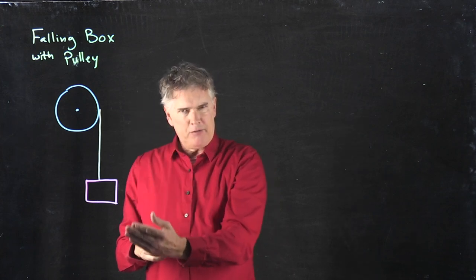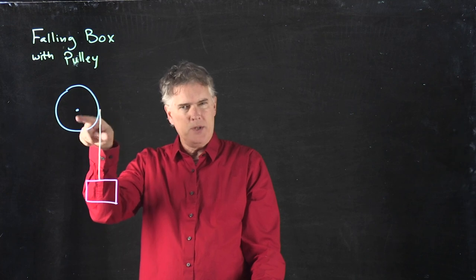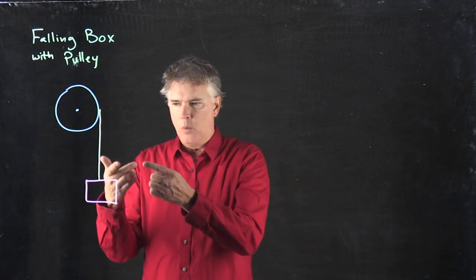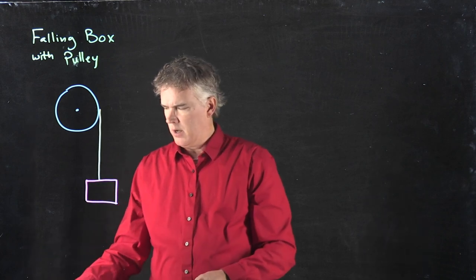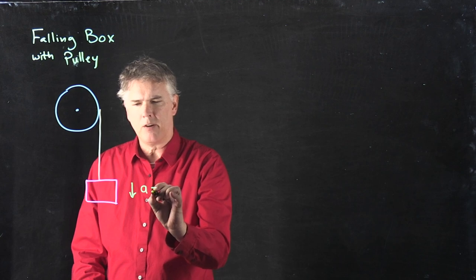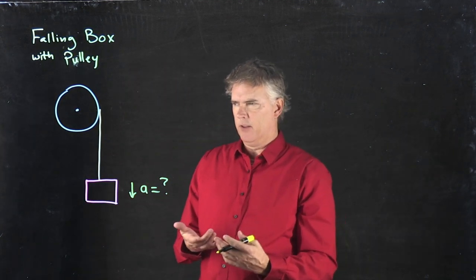And as the box falls, it's going to uncoil the rope and start to rotate the disc. The question that we want to answer is, what is the acceleration of the box going down? So let's figure out how to solve this problem, and we'll give you some givens.